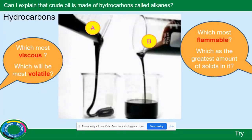This is an opportunity to see what you've learned so far. Look at the heavy crude and the light crude. Decide which is most viscous — will it be A or B? Which is most volatile? Which is most flammable? And which has the greatest amounts of solid in it? All the answers are A or B. Give it a go and see how you get on.